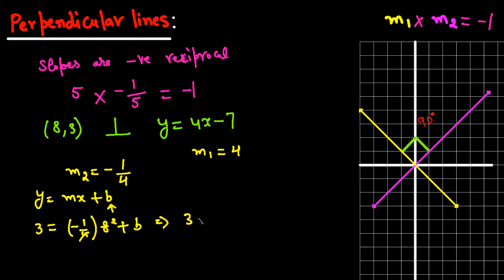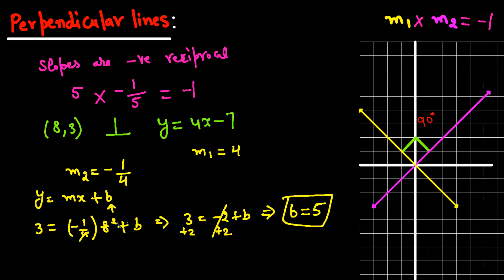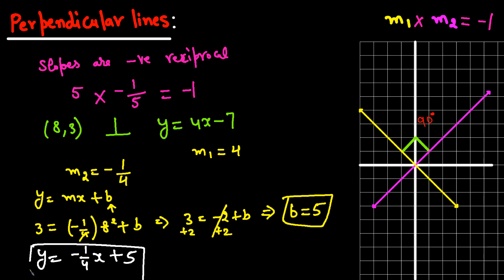(-1/4)(8) = -2, so 3 = -2 + b. Adding 2 to both sides gives b = 5. Now write the equation: y = (-1/4)x + 5. This is the equation of the line perpendicular to the given line and passing through (8, 3).